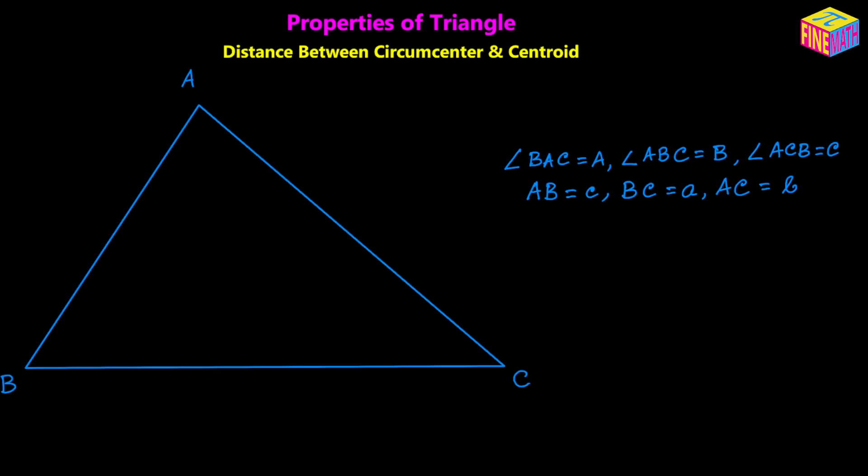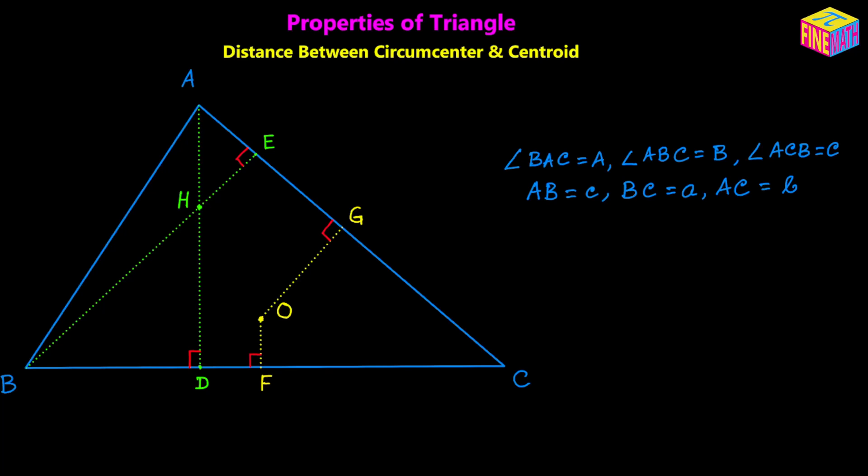Next I am going to draw the orthocenter, the circumcenter, and the centroid of this triangle. Here I have drawn a couple of altitudes and their point of intersection, denoted by uppercase H — that is the orthocenter. Next I have drawn a couple of perpendicular bisectors and their point of intersection, denoted by uppercase O — that is the circumcenter of this triangle.